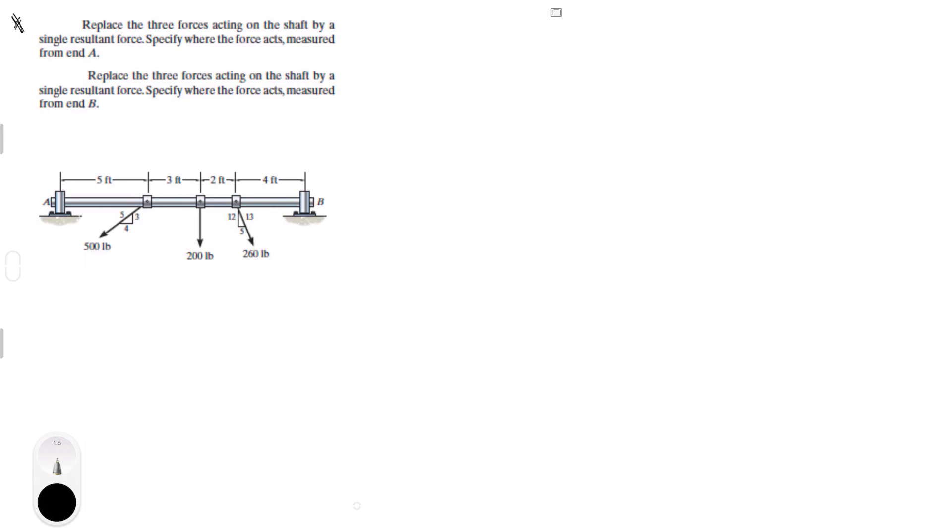Alright guys, let's do this problem where it says replace the three forces acting on the shaft by a single resultant force, and then measure where that force acts, in the first part around point A, right here, and around point B, right here. Make sure I'm in the right, okay perfect. So let's get started.